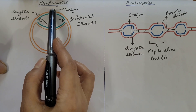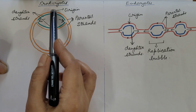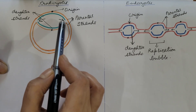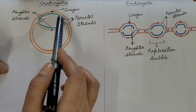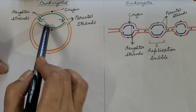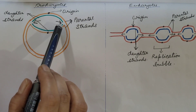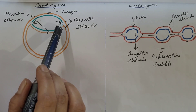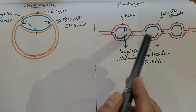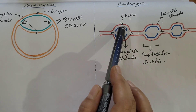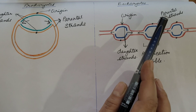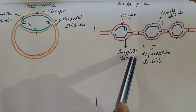In prokaryotes, there is a single origin of replication where the two strands separate and two replication forks are formed, producing one replication bubble. The two replication forks move away from the origin in opposite directions. Strands shown in orange are the parental strands and strands in green are the daughter strands. In eukaryotes, there are multiple origins and at each origin two replication forks are formed, producing multiple replication bubbles. Strands in red are the parental strands and those in blue are the daughter strands.